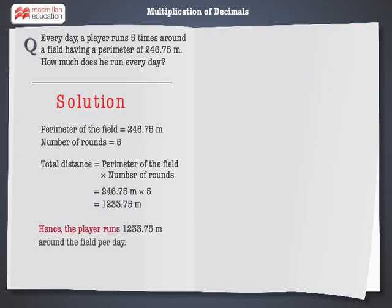Hence, the player runs a total distance of 1,233.75 meters around the field per day.